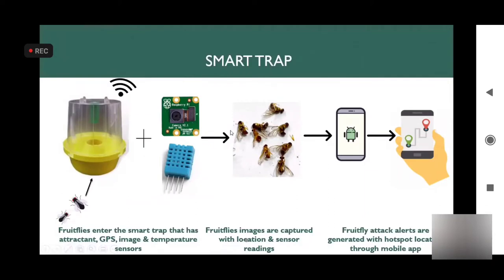These readings are transferred to a host — the cloud — where the YOLO artificial intelligence model is run on the fruit fly images to detect which species are present in the trap. Temperature readings are also stored in the cloud database. After processing, the AI results are transferred to a mobile application installed on the farmer's mobile phone.